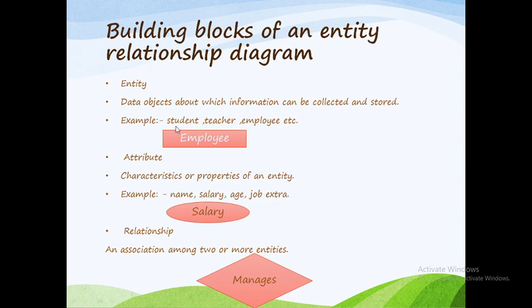For example, Student is an entity with properties such as roll number, name, phone number, address, marks, and course. Teacher is an entity with attributes like ID, name, technical qualifications, and experience. Employee is an entity with attributes including Employee ID, employee name, salary, age, date of joining, designation, and experience.